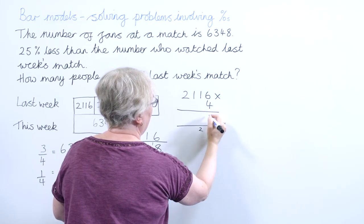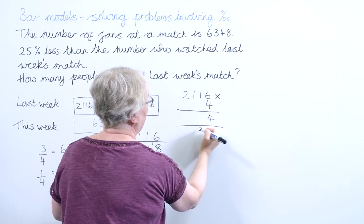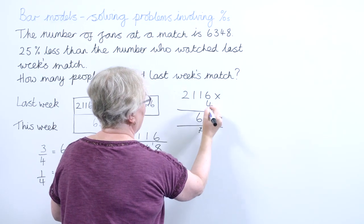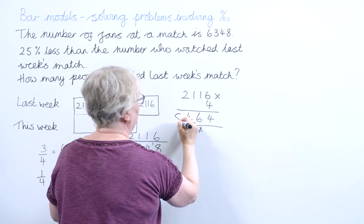6 fours are 24. 1 four is 4, add on 2 is 6. 1 four is 4, 2 fours are 8.